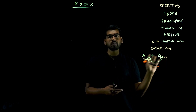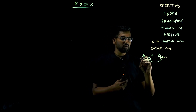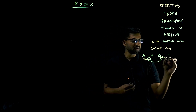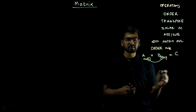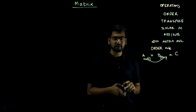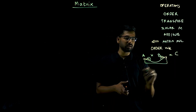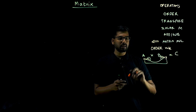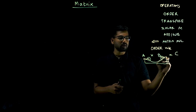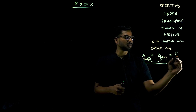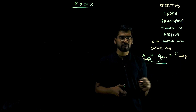So if A is m cross n and B is n cross p, when you multiply A and B you will get C. The C matrix will have order m cross p — rows of A and columns of B.